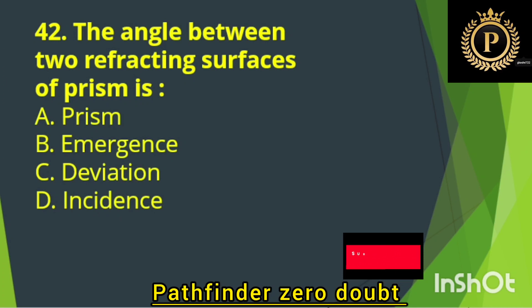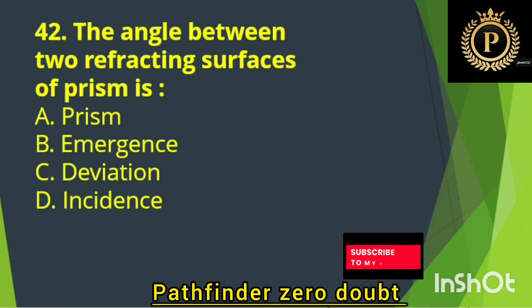The angle between the two refracting surfaces of a prism is — Option C.